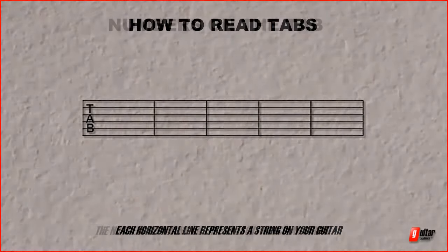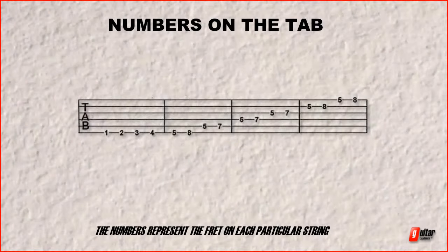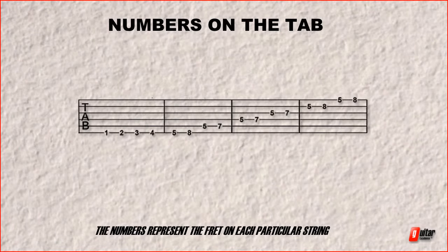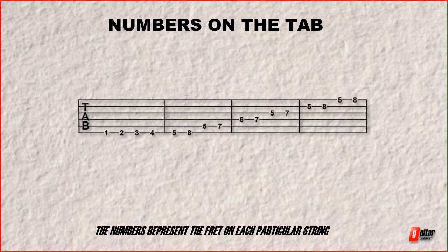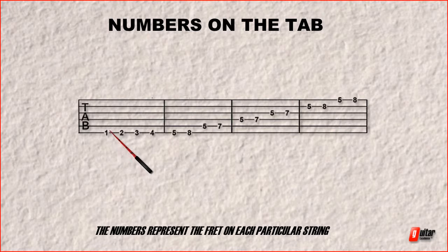Alright, let's have a look at another example. Okay, so here we have another example of what a tab looks like. But in here you can see we've got some numbers placed on some random lines here. Now the numbers represent the fret of your guitar. So the number one is asking you for the first fret.